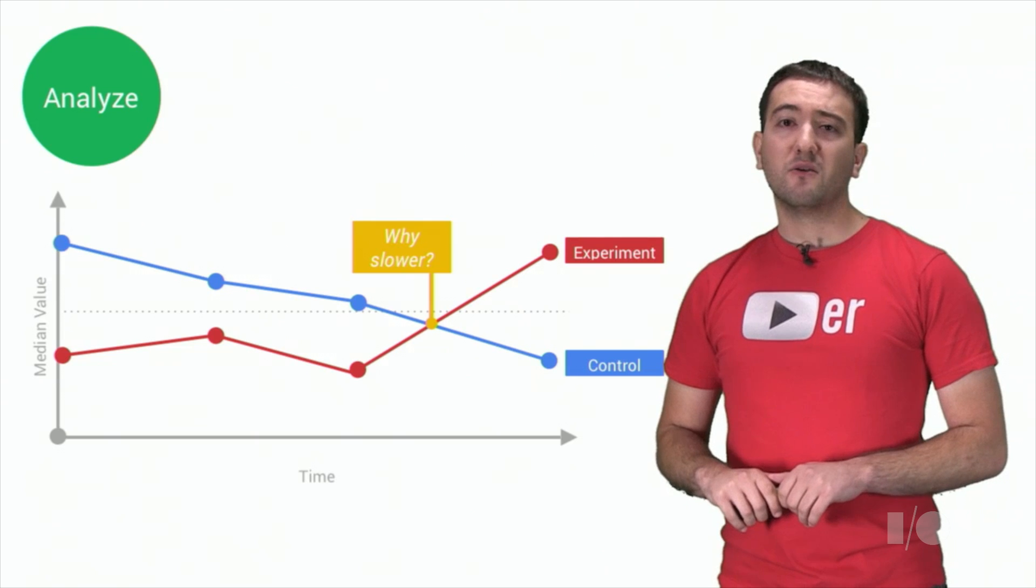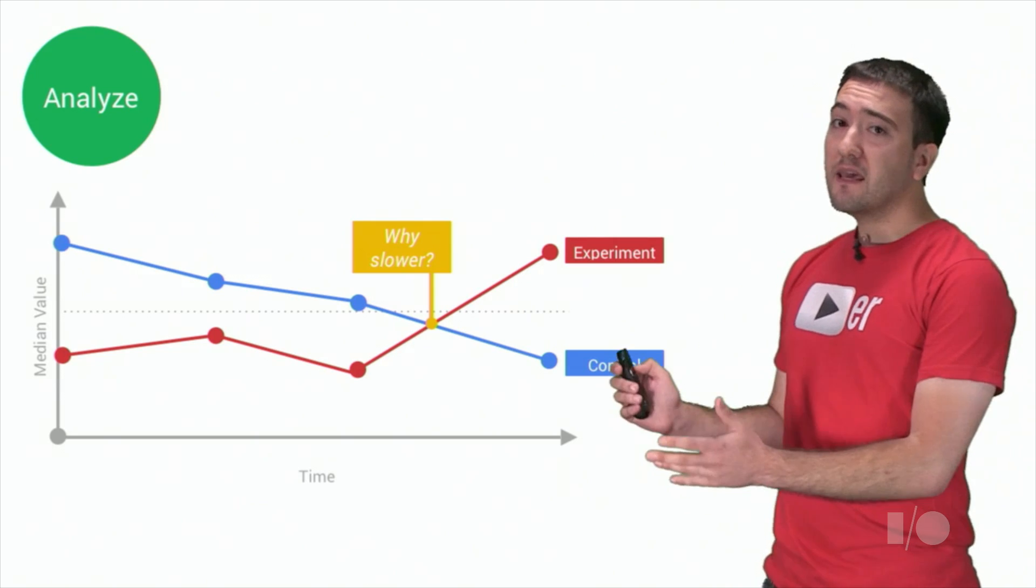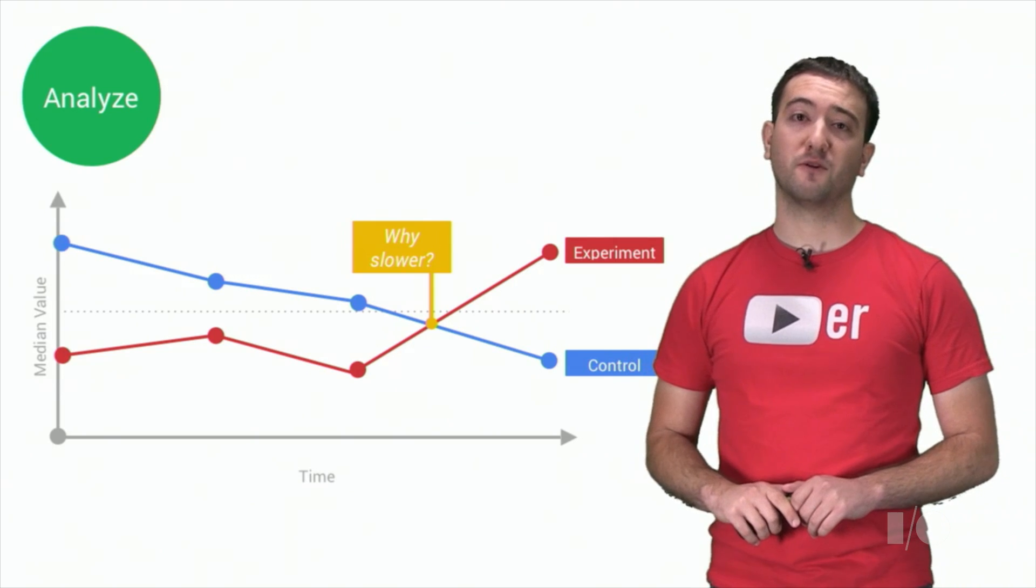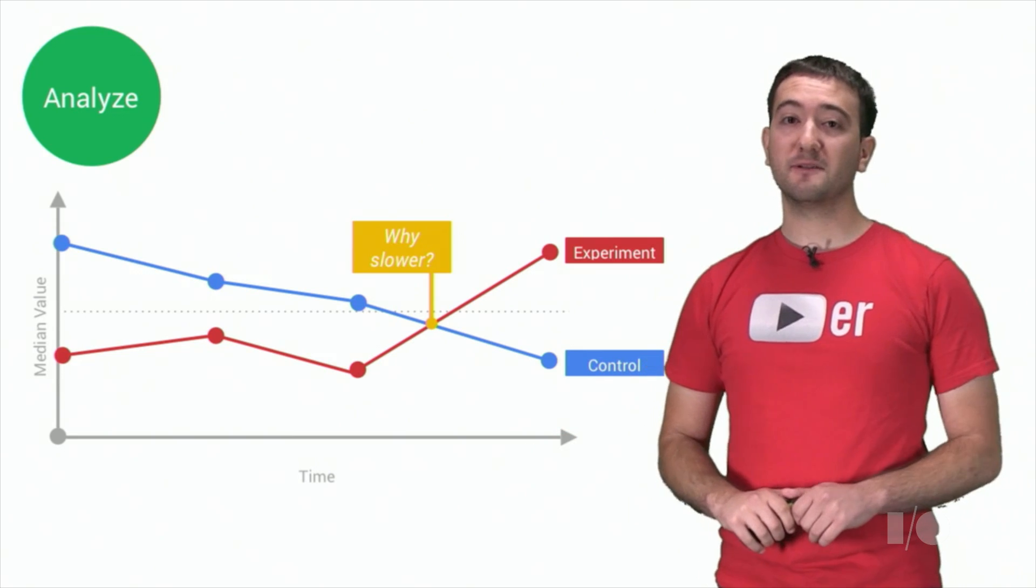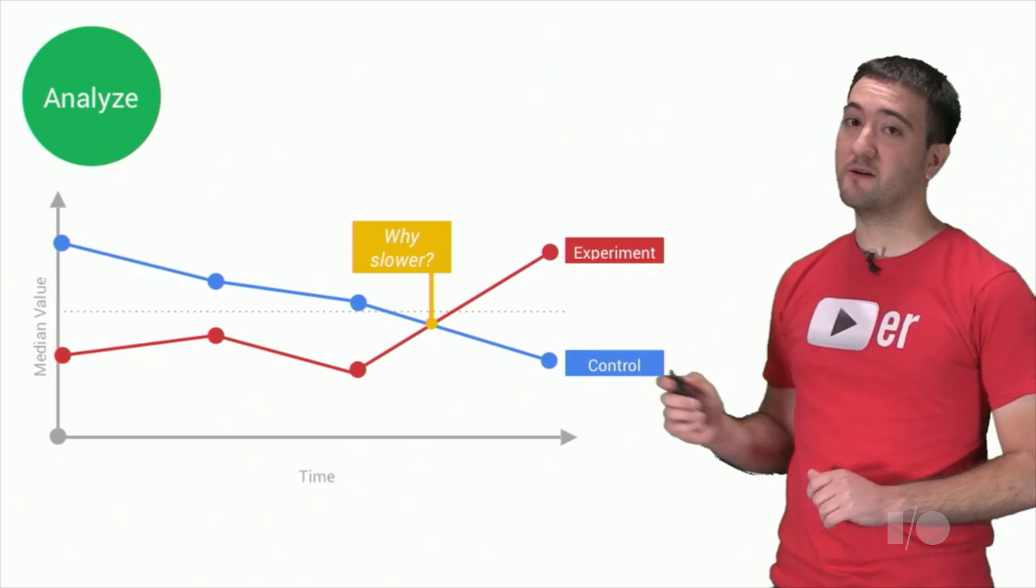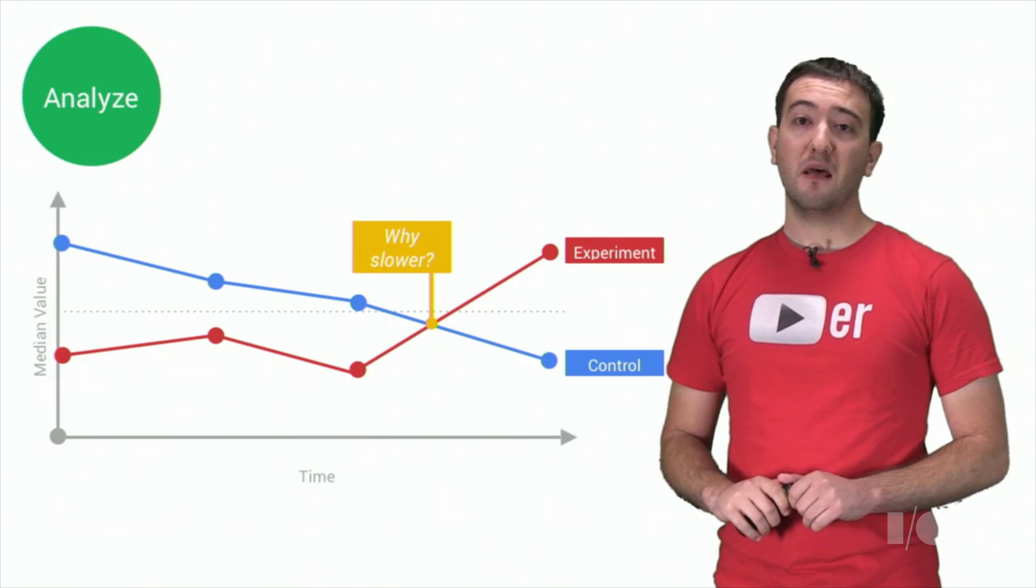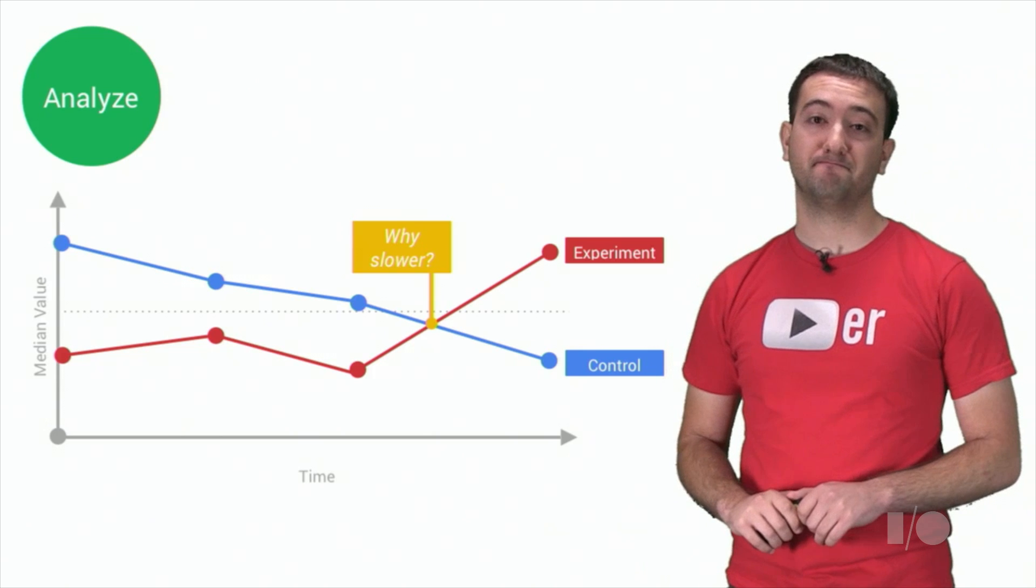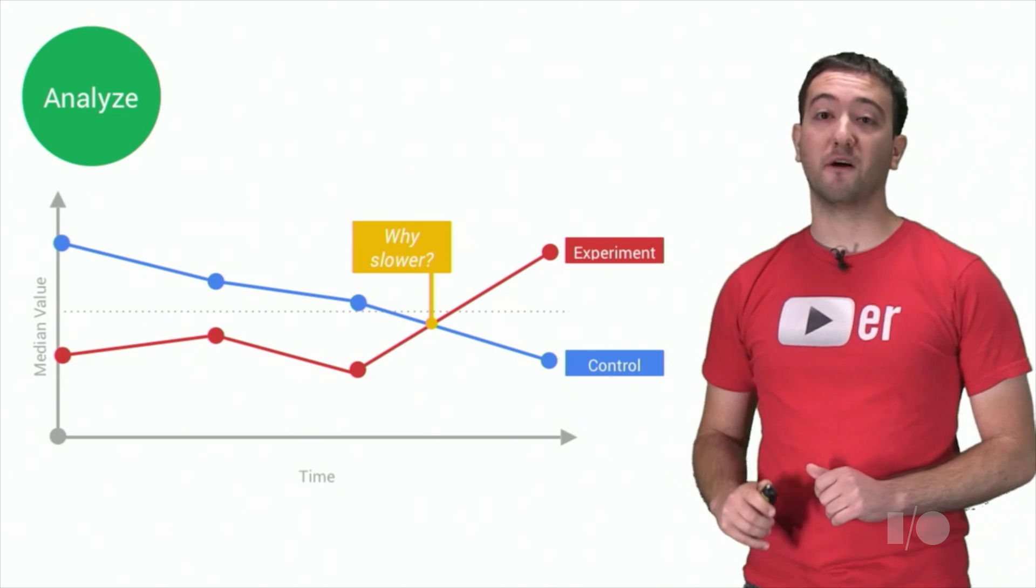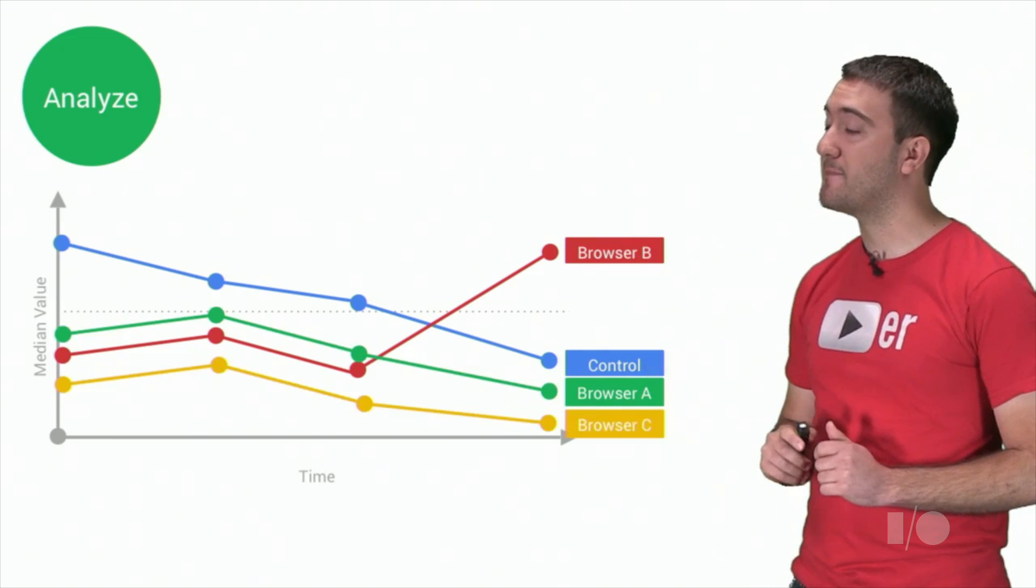To analyze the performance data, we turn to the CSI dashboard. Here, we're able to look at the change in performance over time and compare experiments against controls. For example, in this chart, we're comparing the results of an experiment against the baseline control. The experiment times are lower or faster until the last point.